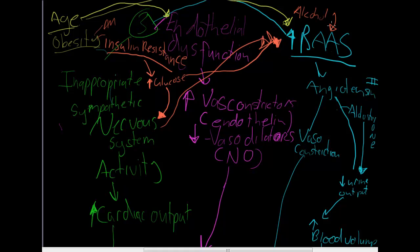Oh, that can affect your RAS system. You can imagine all the stuff you're drinking. Smoking can cause endothelial dysfunction as well as sympathetic nervous system activity. It's a stimulant. So that's a big one.